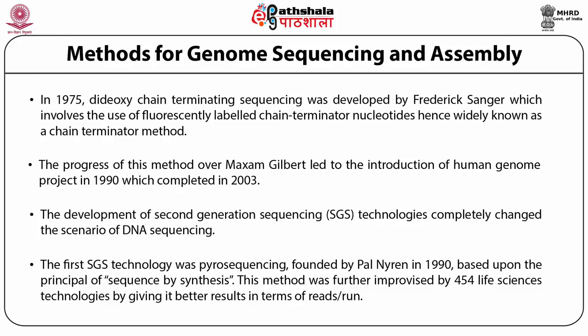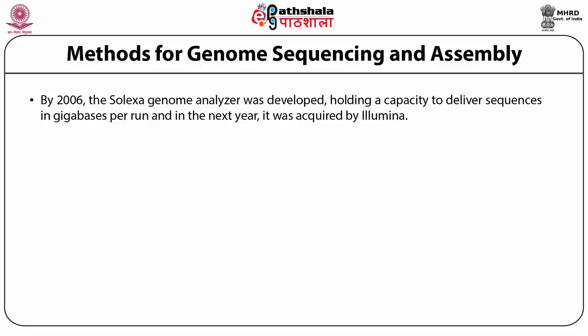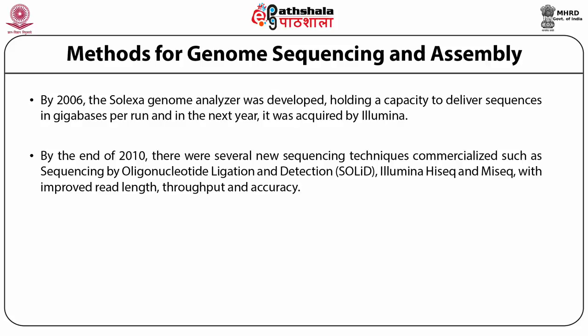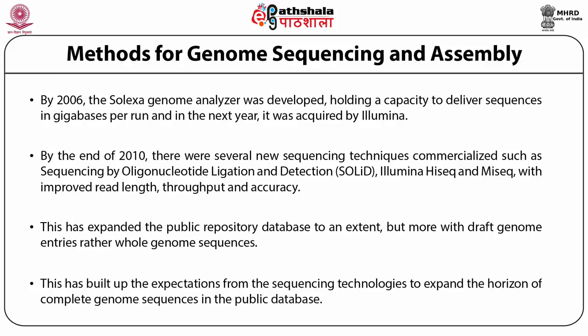The first second-generation sequencing technology was pyrosequencing, founded by Pal Nyren in 1990, based upon the principle of sequencing by synthesis. This method was further improvised by 454 Life Sciences, yielding better results in terms of reads per run. By 2006, the Solexa Genome Analyzer was developed with a holding capacity to deliver sequences in gigabases per run, and in the next year it was acquired by Illumina. By the end of 2010, several new sequencing technologies were commercialized, such as SOLiD (sequencing by oligonucleotide ligation and detection), Illumina HiSeq and MiSeq, with improved read length, throughput and accuracy. This expanded the public repository database, mostly with draft genome entries rather than whole genome sequences.